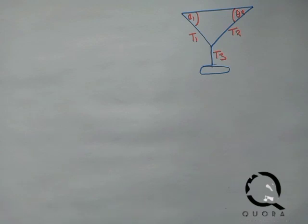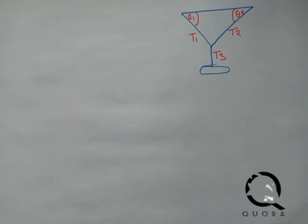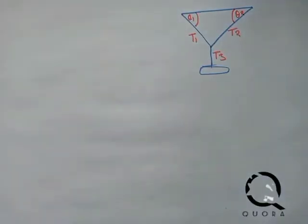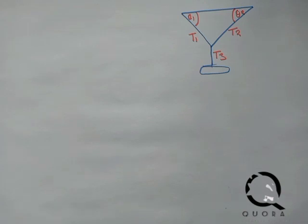From here, we can use two methods: Lami's theorem, or isolating the system by writing the external forces as vector components. We'll proceed using the first method — resolving forces into components according to the equilibrium conditions.